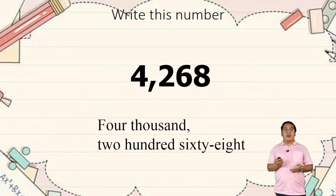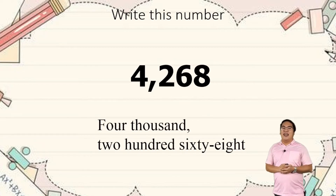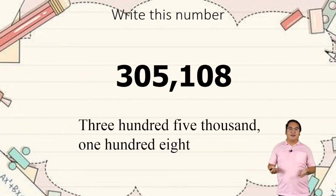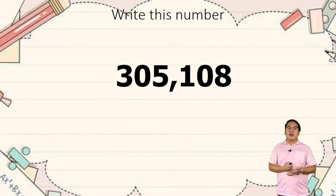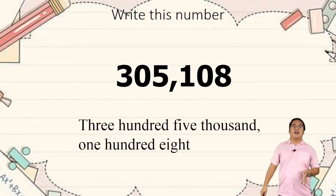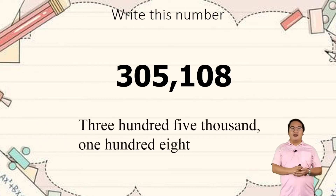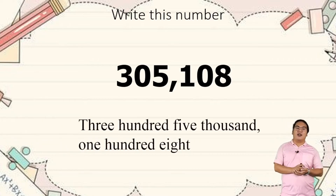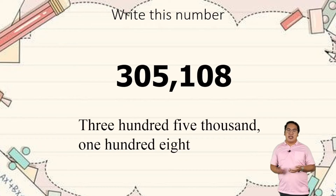We have here four thousand two hundred and sixty-eight. How about the last one — how are we going to write this number? We have here three hundred five thousand, one hundred and eight.